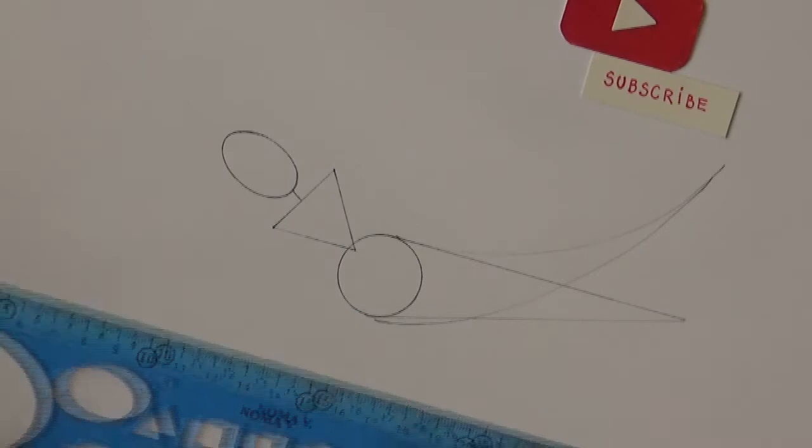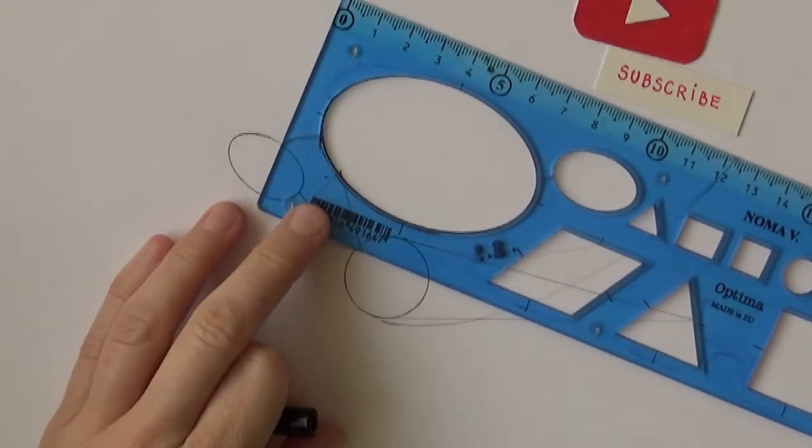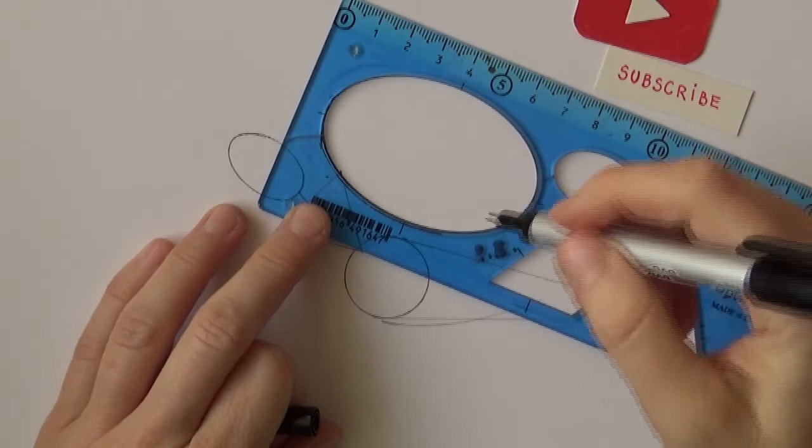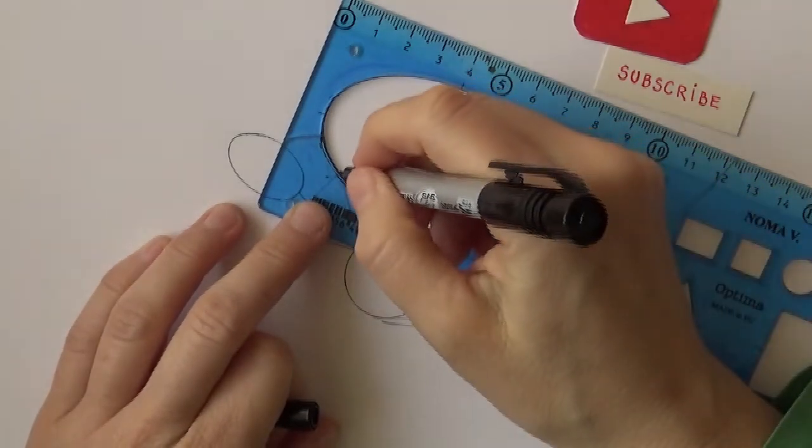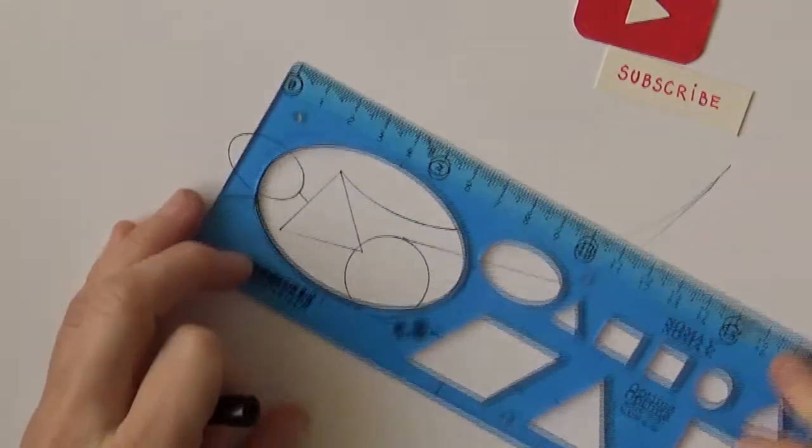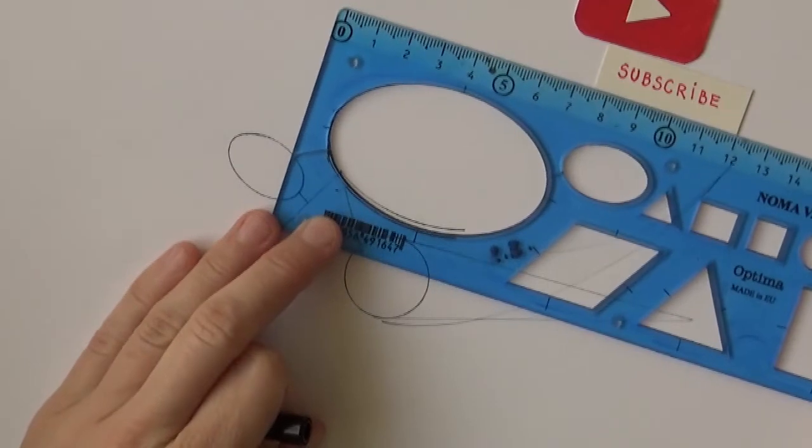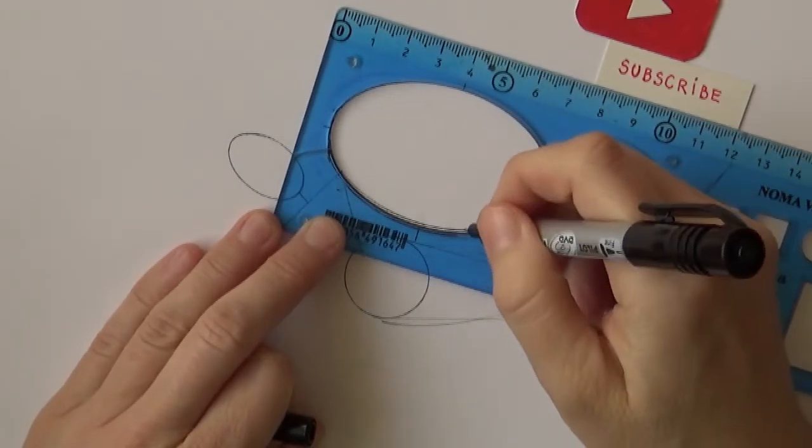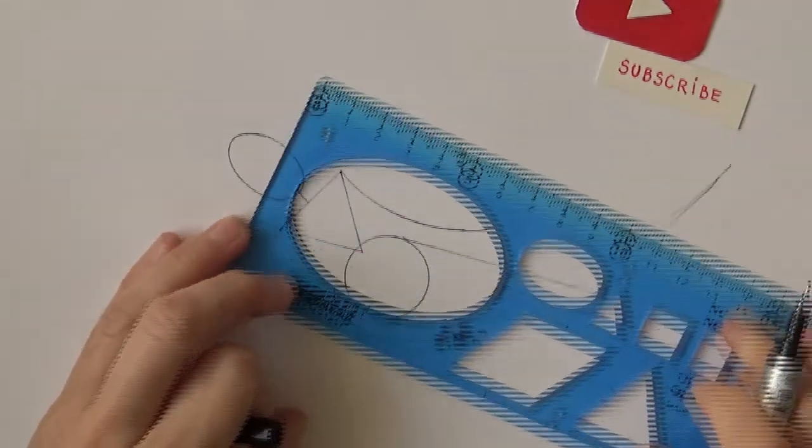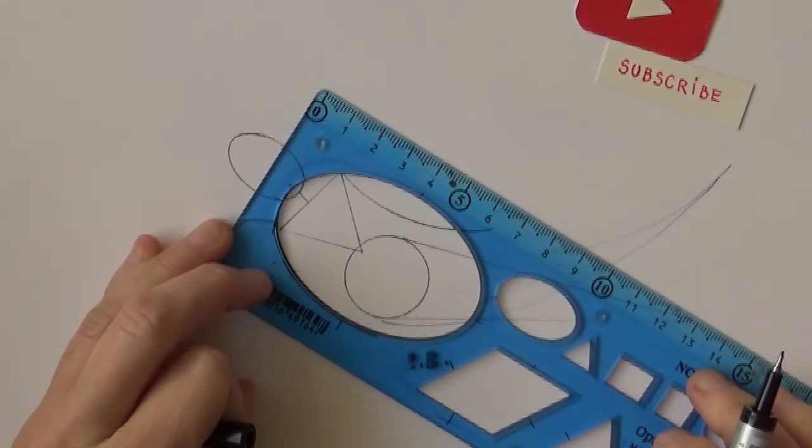For the arms, we can again use our shape ruler. Arms usually come to the mid thighs, so we'll try to make them as long as they are. Or you can make them a little bit longer if you want to have your mermaid a bit more elegant.